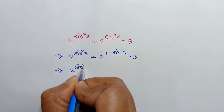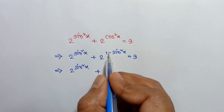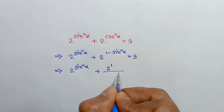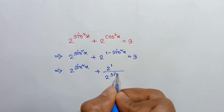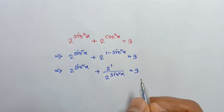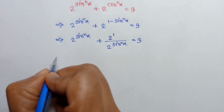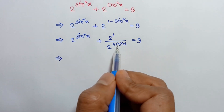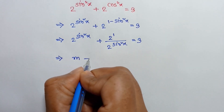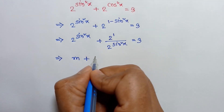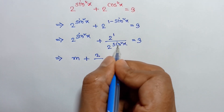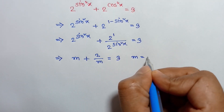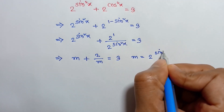So 2 to the power sin squared x plus 2 to the power 1 minus sin squared x can be written as 2 to the power 1 over 2 to the power sin squared x is equal to 3. If we consider 2 to the power sin squared x as m, we can write m plus 2 over m is equal to 3, where m equals 2 to the power sin squared x.